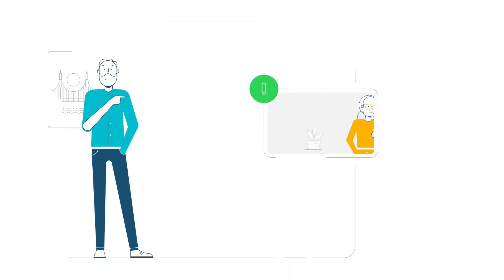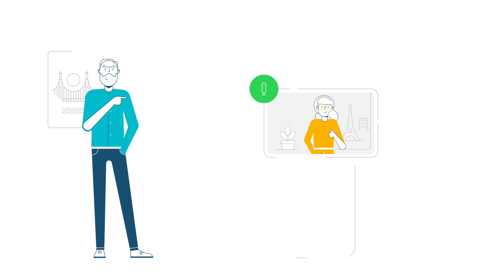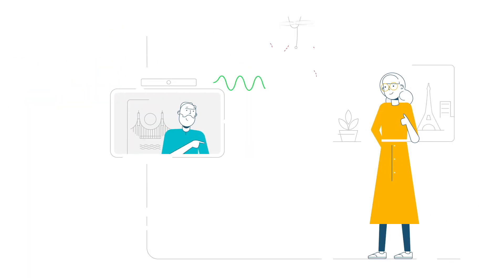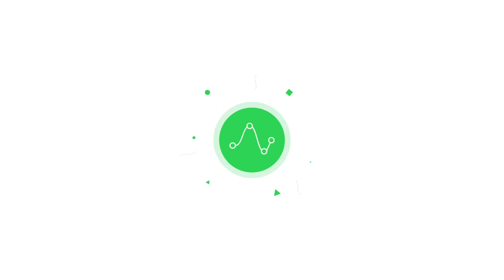The acoustic conditions affect the speech signal both on the way from the speaking participant to the microphone, as well as from the loudspeaker to the listening participant. The signal is processed after it is picked up by the microphone to enhance intelligibility and reduce noise, but results are better where the signal picked up by the microphone is better.